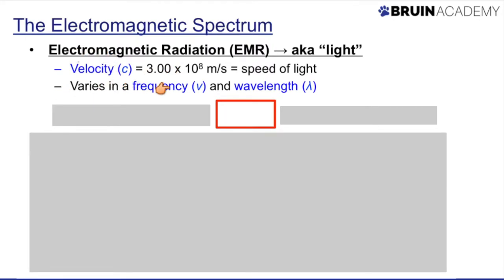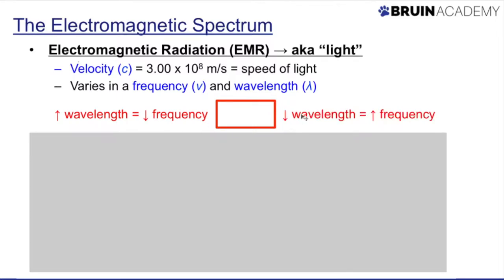EMR varies in both frequency and wavelength, and it turns out that these two things are inversely proportional, meaning that as wavelength increases, frequency decreases, and as wavelength decreases, frequency increases. So the equation, this very fundamental equation of EMR, is that c is equal to lambda nu, where lambda represents wavelength, and nu, this is not a V by the way, this is a Greek letter nu, represents frequency.